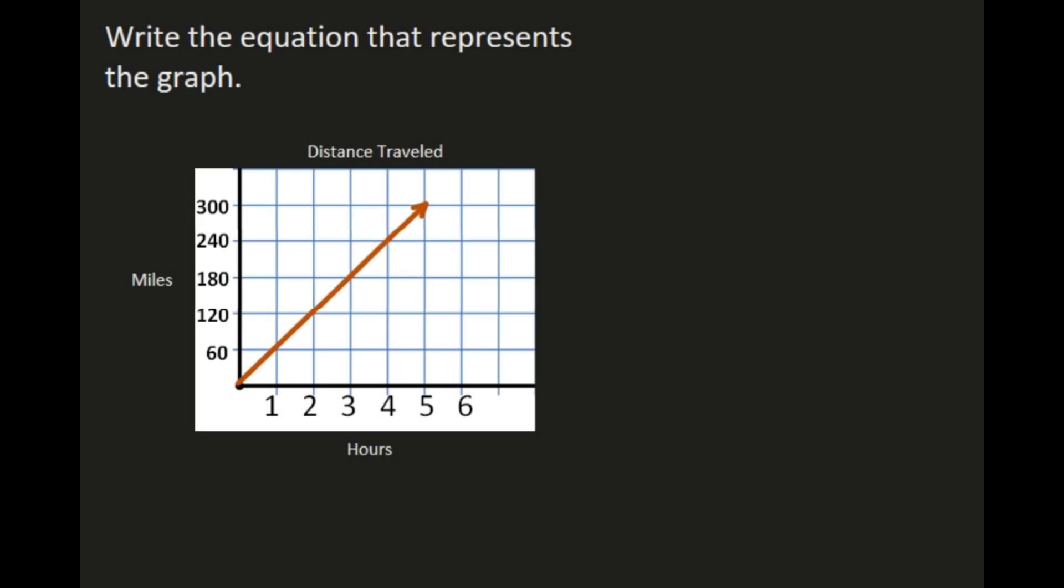This example asks us to write the equation that represents our graph, and our graph shows us the distance traveled in miles per hour. And the first thing we need to determine is whether this is a proportional relationship. Well, we have a linear graph, and it goes through the origin, so this is a proportional relationship. And because it's a proportional relationship, we know that equation is going to be y equals kx, which means we're going to need to calculate k, which is our constant of proportionality.